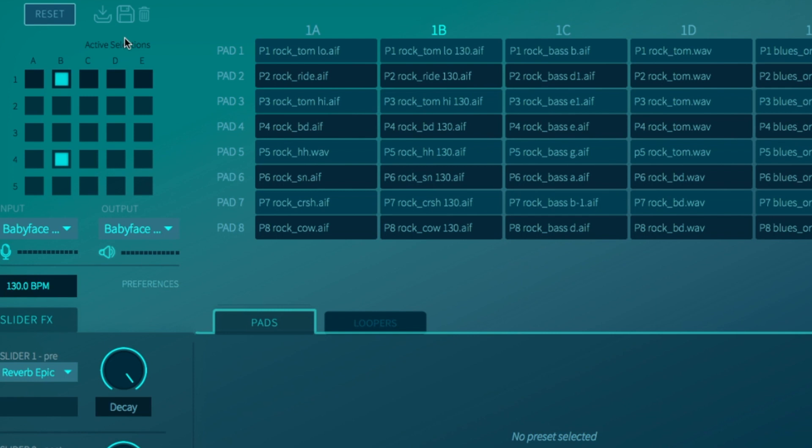Also note that in a preset a sound can be either a one shot or a loop. A loop is basically a sound which repeats itself continuously. Now let's go to what we call the project buttons.